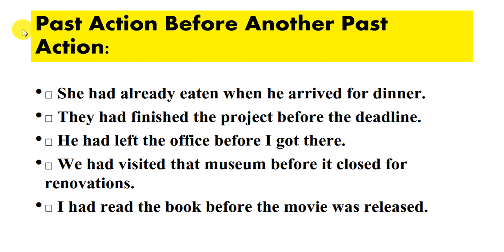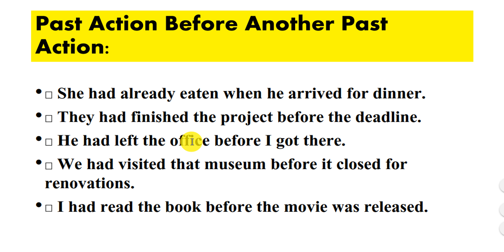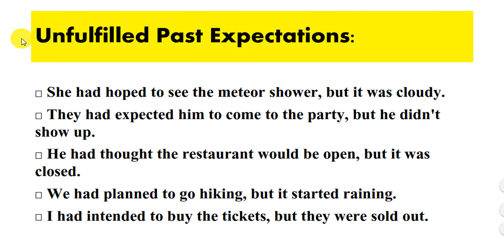The past perfect tense is used to express a past action before another past action. For example: she had already eaten when he arrived for dinner; they had finished the project before the deadline; he had left the office before I got there.